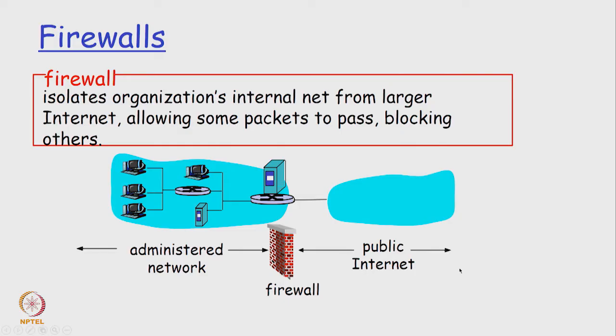We have covered this in good detail in the Information Security 3 course, but we thought we would revise some of the basics for people who have not done that course or who have done it and forgotten something about it. Now the first thing is the firewall. What is the firewall? As the name suggests, a firewall is something which will isolate an organization's internal network from the larger internet.